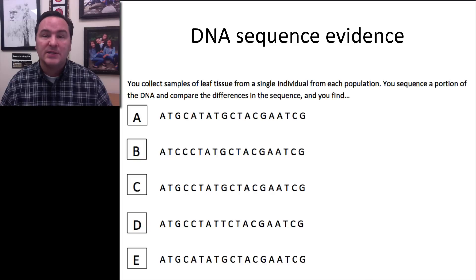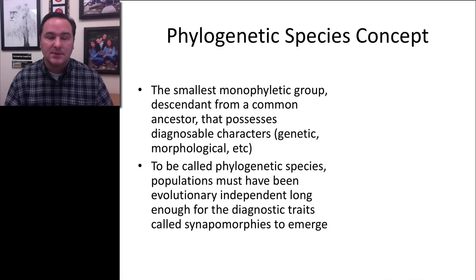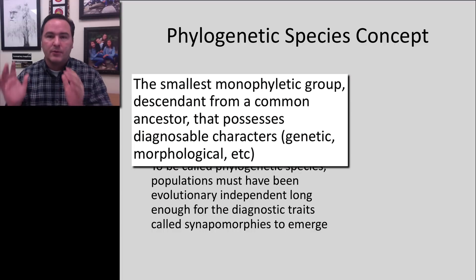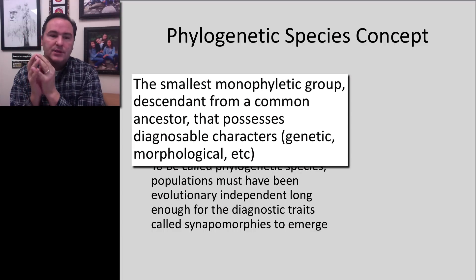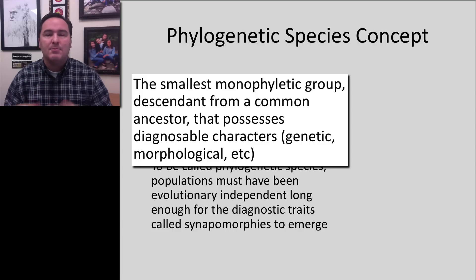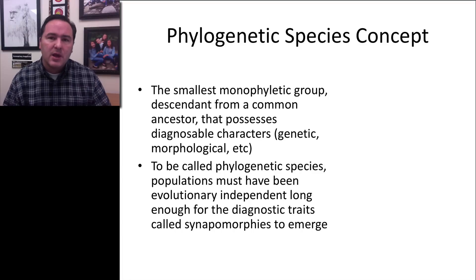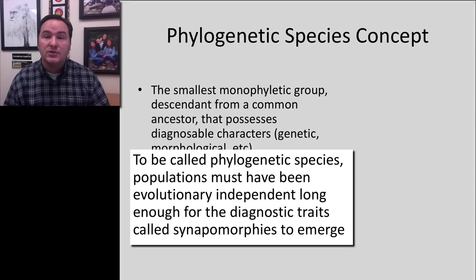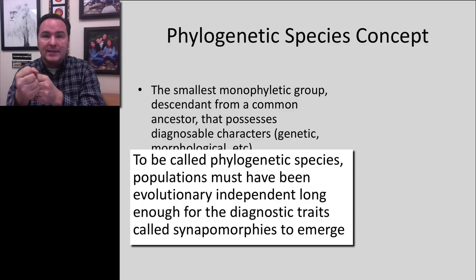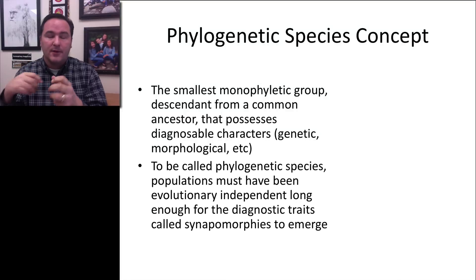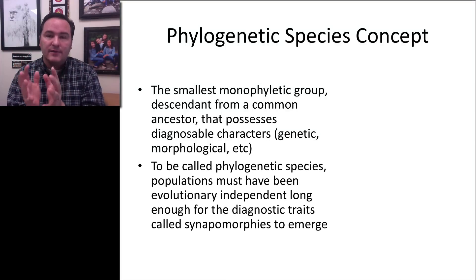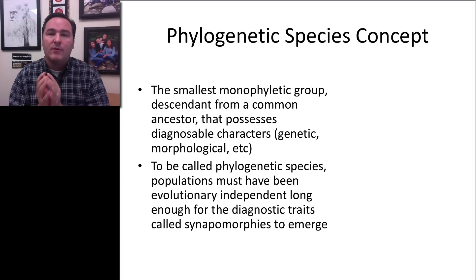This brings us to the phylogenetic species concept, where the smallest monophyletic group — all part of the same branch, descended from one common ancestor — that possesses diagnosable characteristics (DNA sequences, morphological, behavioral, or other traits) is considered a species. Populations must have been evolutionarily independent long enough for those shared traits to unite them. If there are enough traits to group organisms together into a branch on the tree, we can refer to that as a species.